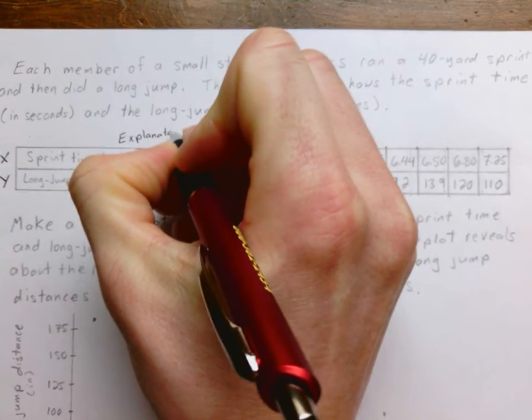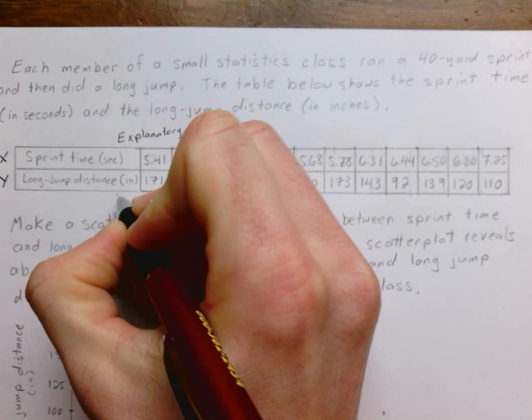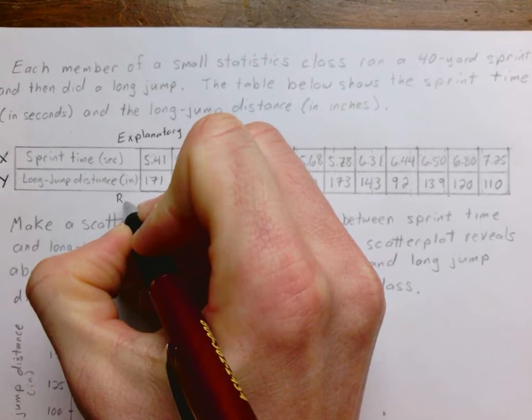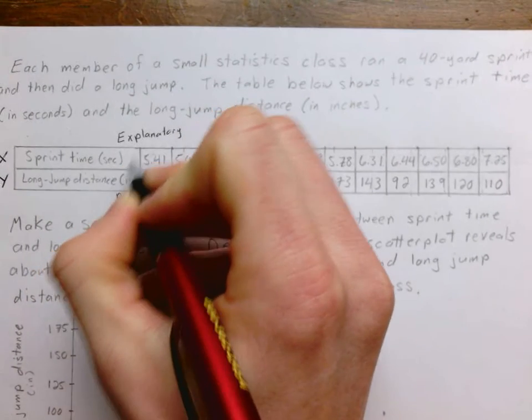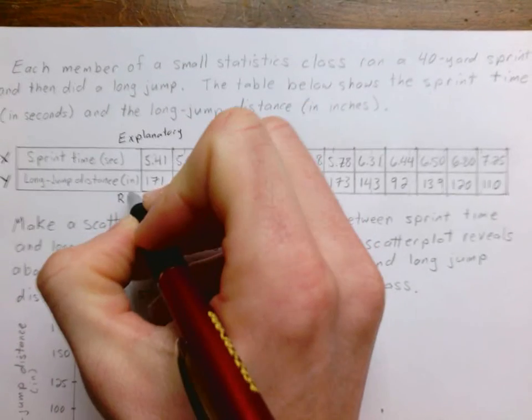It makes sense if you know much about long jump. Generally faster people can jump further. So the sprint time is what we're using to explain the distance that they were able to jump.